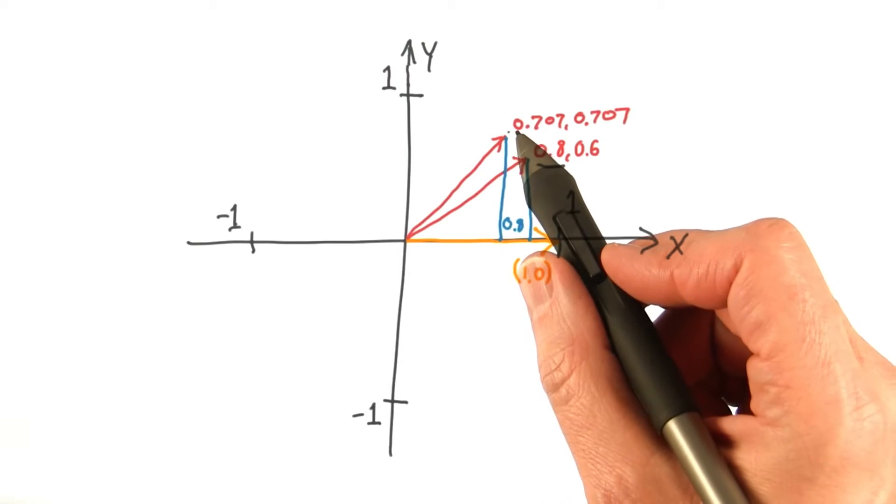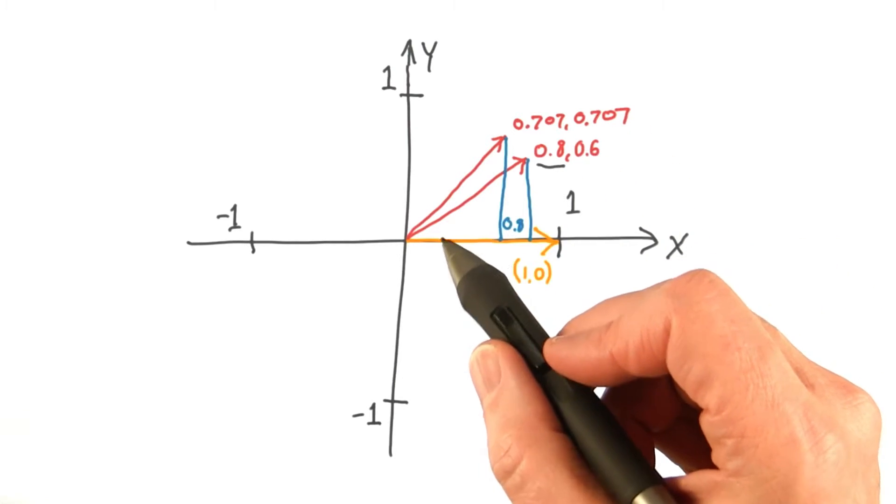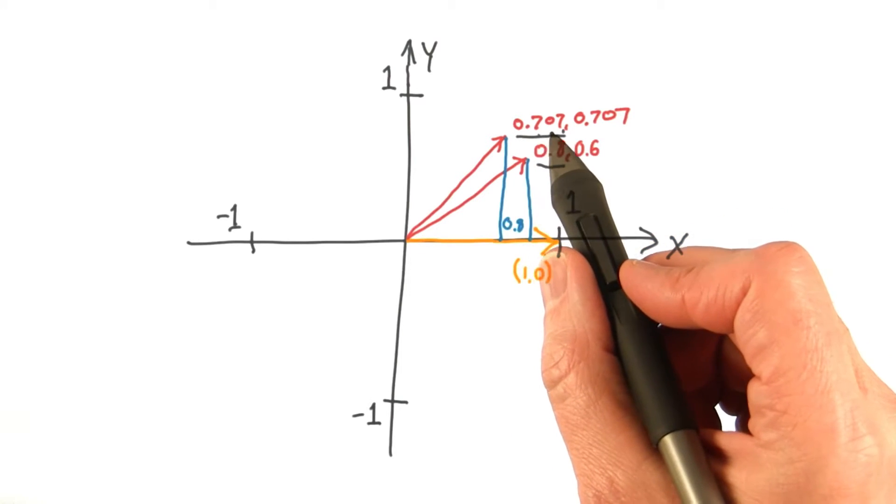With the vector 0.707, 0.707, a 45 degree angle here, the dot product is again the x component, 0.707.